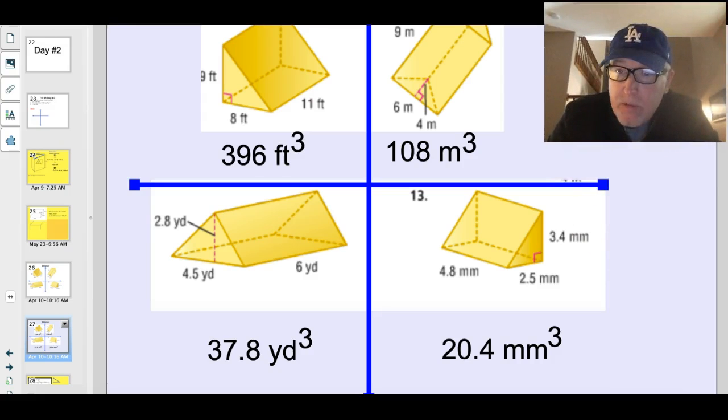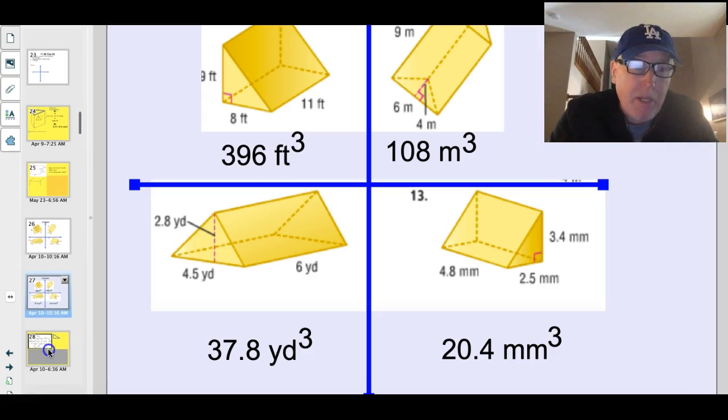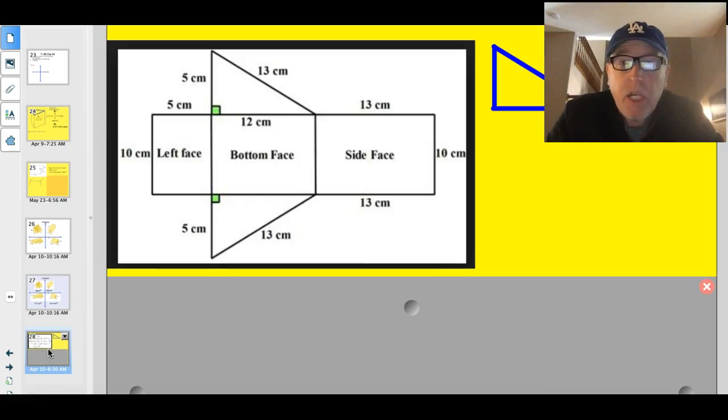Big base. You find the 3.4 times 2.5. Divide that by 2. You get the area of this triangle. Multiply it by the height. All right. Let's see. You are ready for your yeah but.